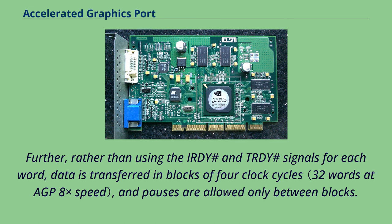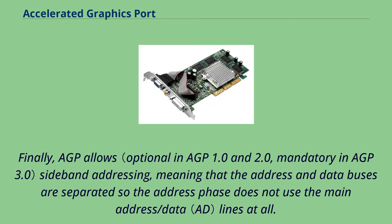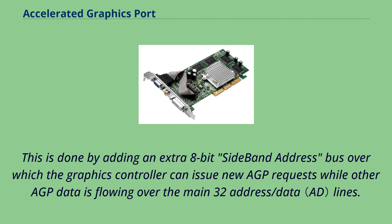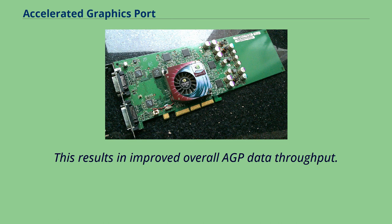Further, rather than using the IRDY# and TRDY# signals for each word, data is transferred in blocks of 4 clock cycles, and pauses are allowed only between blocks. Finally, AGP allows sideband addressing, meaning that the address and data buses are separated so the address phase does not use the main address/data lines at all. This is done by adding an extra 8-bit sideband address bus over which the graphics controller can issue new AGP requests while other AGP data is flowing over the main 32 address/data lines. This results in improved overall AGP data throughput.